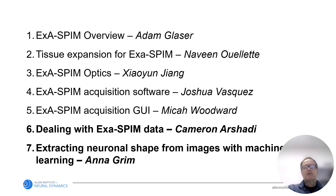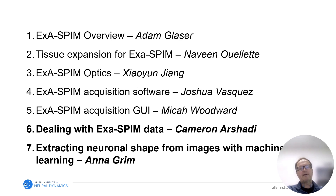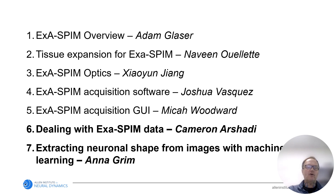A major challenge is how to deal with the huge image data after acquisition. A scientific computing team together with collaborators at Janelia Research Campus built an efficient pipeline to compress, move, and serve data for analysis, all in the public cloud. The data science, outlined by Cameron Arshadi, is the topic of video six. Finally, in video seven, Anna Grimm will outline ongoing work on how images of neurons can be analyzed using modern machine learning methods.